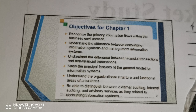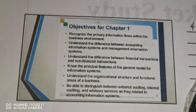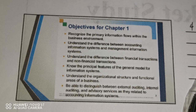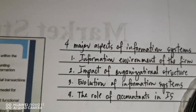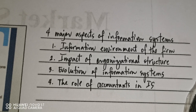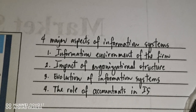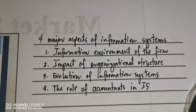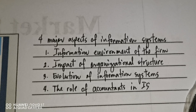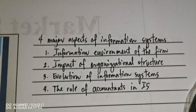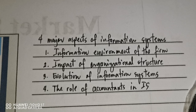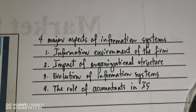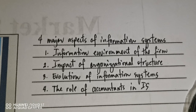Lastly, be able to distinguish between external auditing, internal auditing, and advisory services, and how they relate to accounting information systems. This chapter is also divided into four major aspects: the information environment of the firm, the impact of organizational structure, the evolution of information systems, and the role of accountants in information systems.